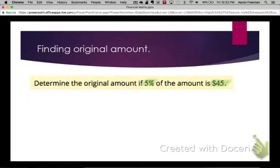For us to break this down, if 5% is $45, we want to find out what 1% is. So to do that, to find out what 1% is, we divide 45 by the amount in percent that we've got.